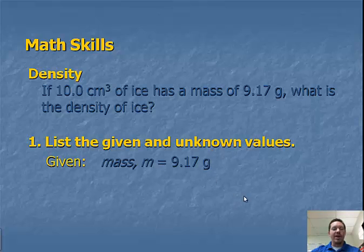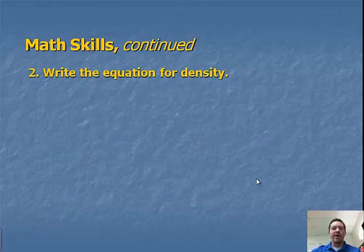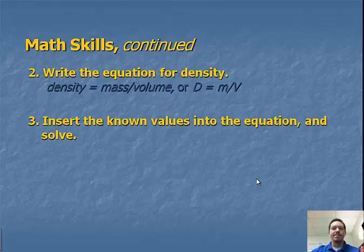So we're going to list our given and unknown values. So mass is 9.17 grams. Our volume is 10.0 cubic centimeters. And density is what we want to find, so that's our unknown. So we're going to write the equation for density, which equals mass divided by volume. So writing down our equation, d equals m over v.